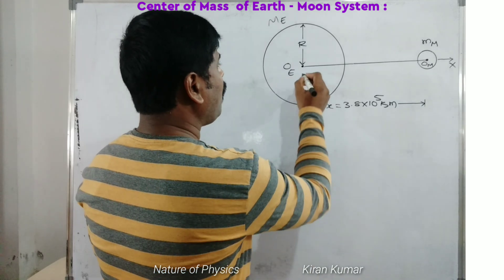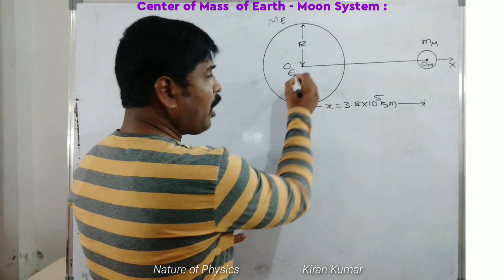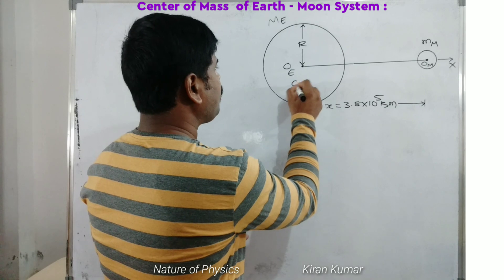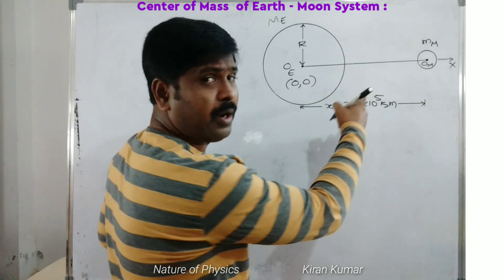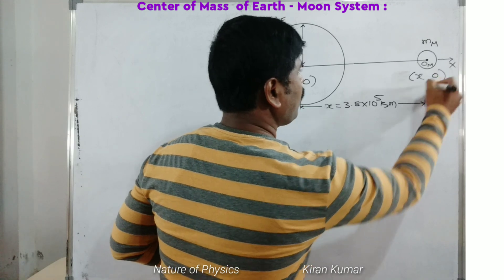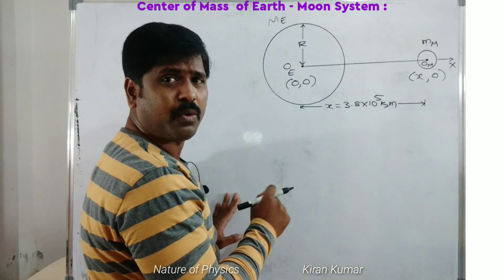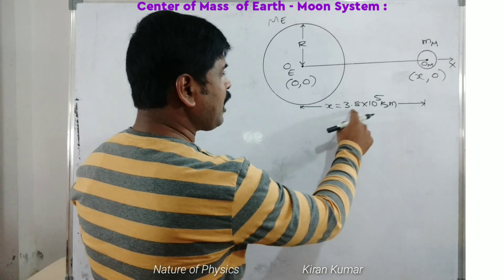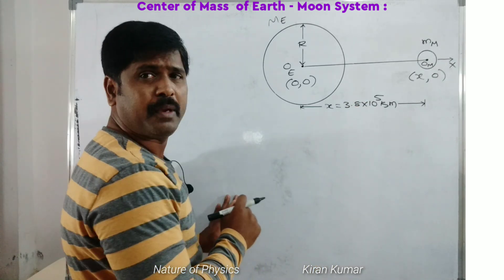The coordinates at the origin — the center of the Earth — are (0, 0). The coordinates of the Moon are (x, 0), along the x-axis with y-coordinate 0. The x value is 3.8 × 10⁵ kilometers.